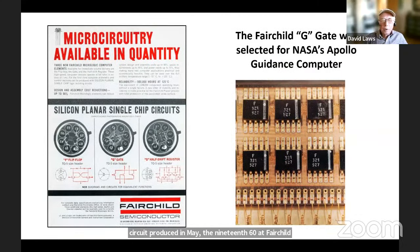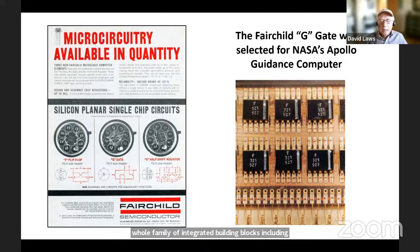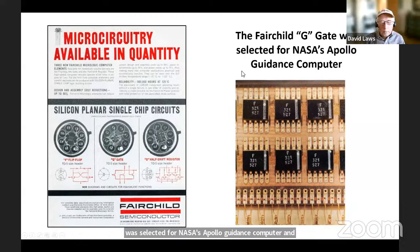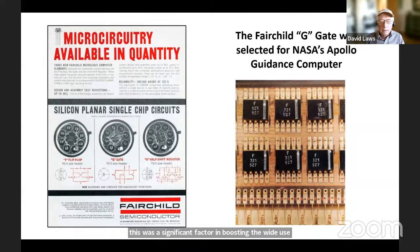That device was the basis of a whole family of products Fairchild introduced over the next year — integrated building blocks including flip-flops, shift registers, and pieces of adders. The G-Gate was selected for NASA's Apollo guidance computer, which was the first major program to employ integrated circuits. There were others that flew before Apollo, but this was a significant factor in boosting the wider use of circuits in applications outside of aerospace and military.